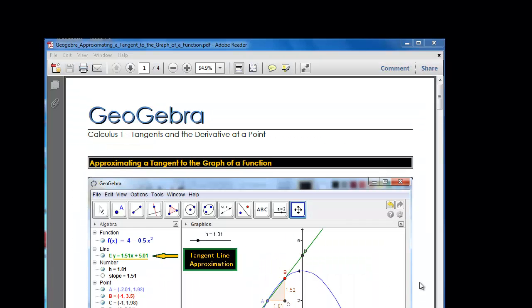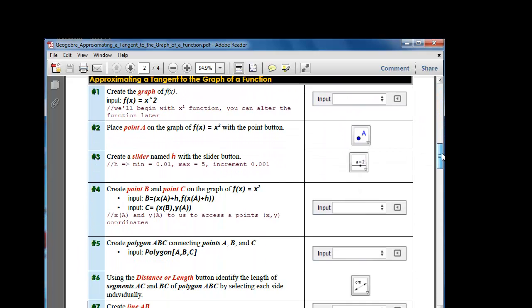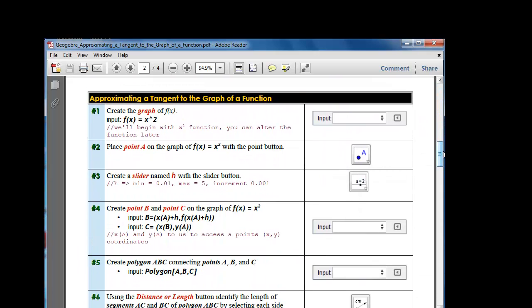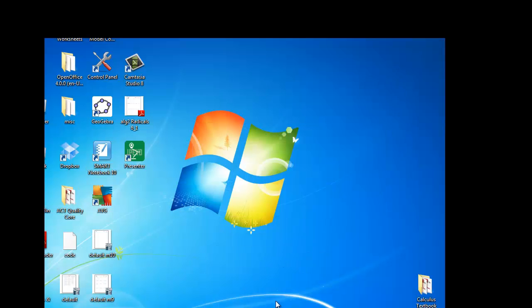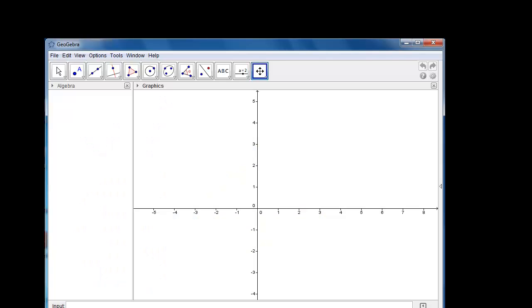So get your GeoGebra guide out and go to page two and let's follow the ten steps to setting up the approximation of a tangent to the graph of a function. Step number zero, open GeoGebra. Step number one, create the graph f of x. In the input box we'll type f of x equals x squared. You have to use the caret to activate the exponent. Hit enter and we have the graph of x squared.